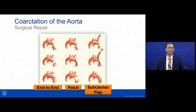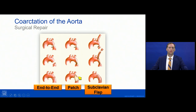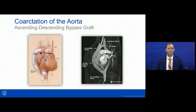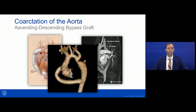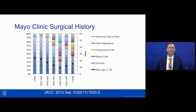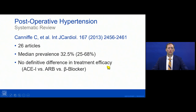Surgically, options include end-to-end anastomosis — cutting out the coarcted segment and reapproximating — or extended end-to-end bringing the descending aorta to the undersurface of the transverse arch to address arch hypoplasia. Patch repair and subclavian flap repair are performed in some situations, though less frequently now. In adults, an ascending-to-descending bypass graft is a reasonable option. Trends at Mayo Clinic show proportionally more interposition or bypass grafts since around 2000, reflecting demographic changes and increasing use of grafts.